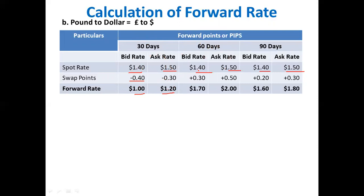For 60 days, the spot rate is 1.40 bar 1.50. The forward points are 30 bar 50, which is an increasing trend, so we add. 1.40 plus 0.30 equals 1.70. 1.50 plus 0.50 equals 2.00. For 90 days, the forward points are 20 bar 30 — increasing trend, so we add. 1.40 plus 0.20 equals 1.60. 1.50 plus 0.30 equals 1.80. The pound to dollar forward rates are: 30-day 1.00 bar 1.20, 60-day 1.70 bar 2.00, 90-day 1.60 bar 1.80.